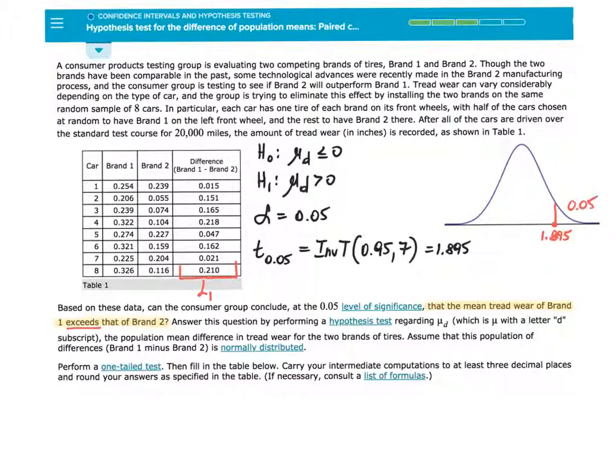Now let's identify our hypothesis statements. Please notice, the question is, can we conclude that the mean tread wear of Brand 1 exceeds that of Brand 2? Exceeds means is greater, which means I'm going to assume that when I take this set of numbers minus the second set of numbers, first set being greater, at least that's my assumption, will produce positive quantities. So I'm saying, is it true that the mean difference is greater than zero?